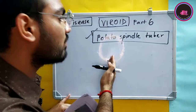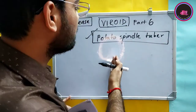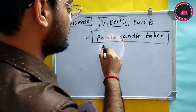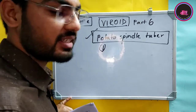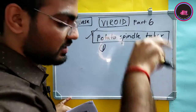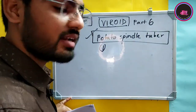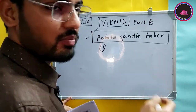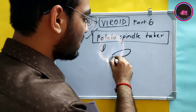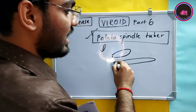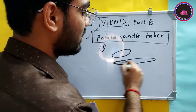Now let's talk about some symptoms of potato spindle tuber viroid. The symptoms include reduction in leaf size and reduction in internode length, causing the plant to become stunted. Importantly, the tubers become small, elongated, and some portions are cracked.